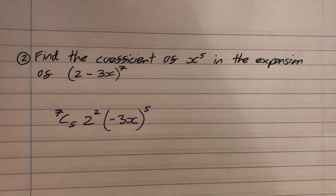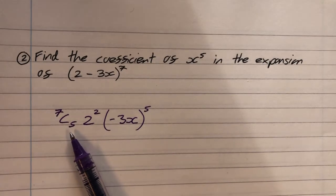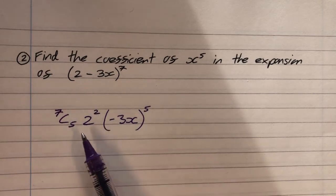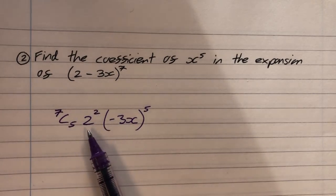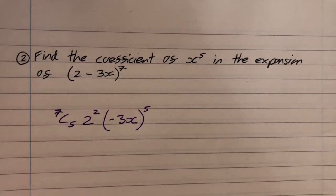Alternatively, you could write that as 7C2. It's exactly the same number. 7C2 and 7C5 are the same number because the number of ways of choosing two twos from the seven brackets is going to be the same as the number of ways of choosing five 3x's from the seven brackets. And that's reflected using the line of symmetry in Pascal's triangle.